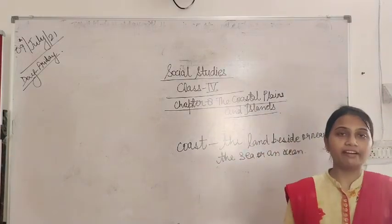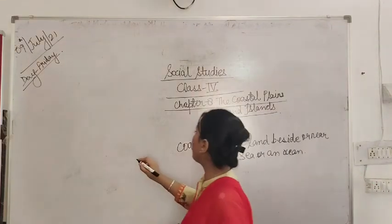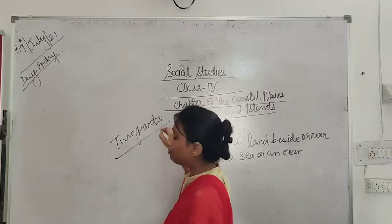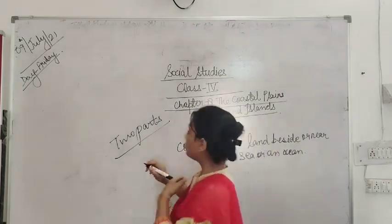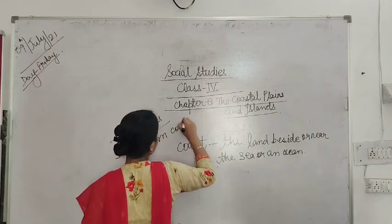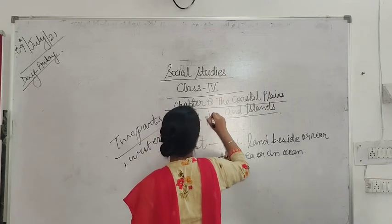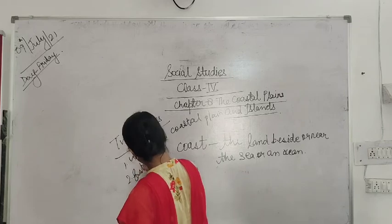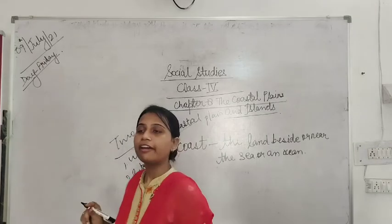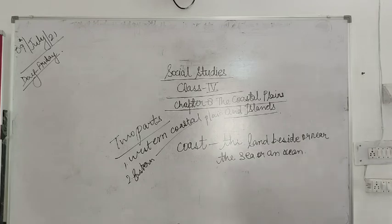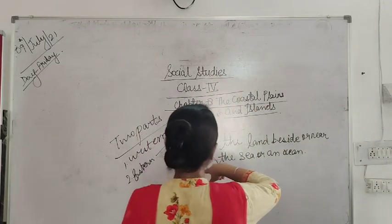The coastal plains are divided into two parts. Those two parts are the western coastal plains and the eastern coastal plains. You can underline this.